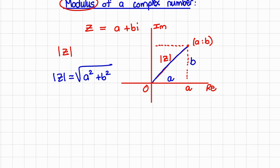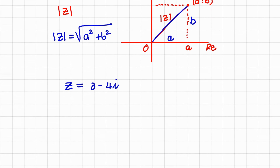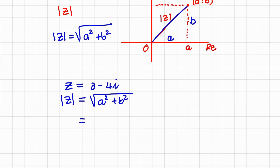Let's look at a quick example. Let's say we have the complex number 3 minus 4i, and we want to find the modulus. The modulus equals the square root of a squared plus b squared, where a equals 3 and b equals negative 4. So that's the square root of 9 plus 16, which is the square root of 25, so the modulus is equal to 5.